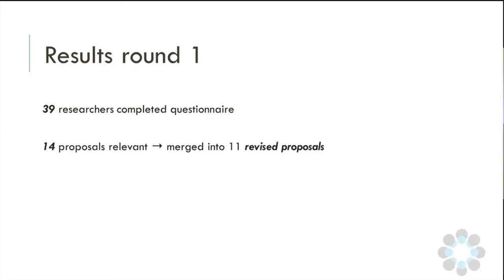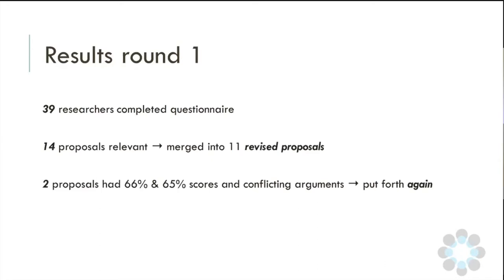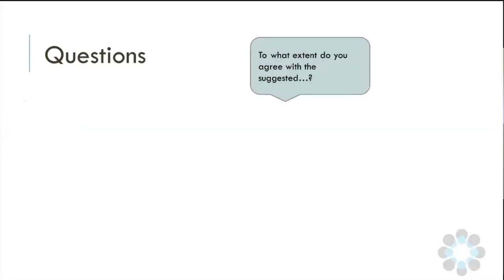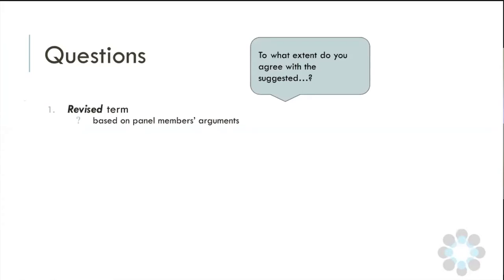There were two proposals with somewhat lower scores — 66% and 65% relevant — that had very conflicting arguments, with some people strongly in favor of including them and others strongly against. So we revised those two and put them forth again. In round two, we only asked participants to rate their agreement with the revised term, showing them the old term, the new term, a summary of key arguments, and how we interpreted them to reach the revised version. In the second round, 35 researchers participated, and 10 of the 11 revised terms gained consensus; one needed substantial revision.